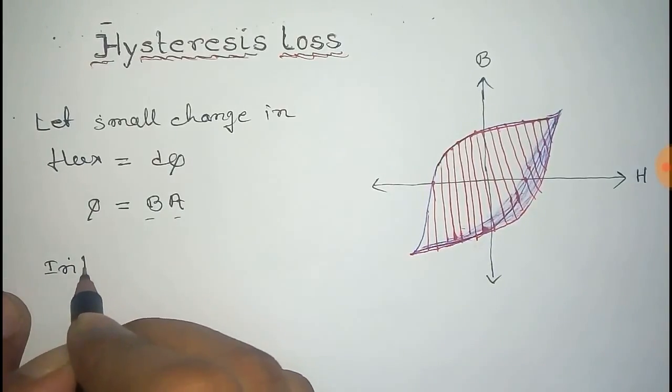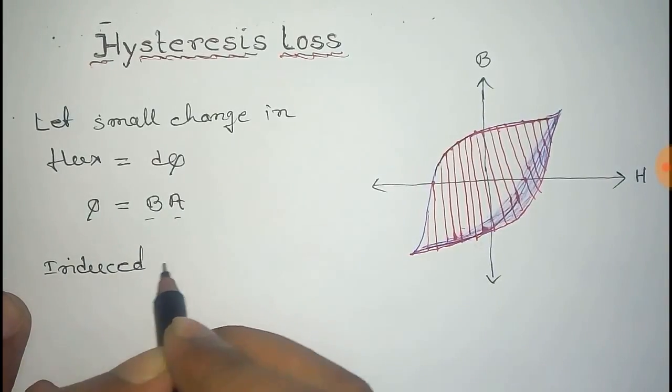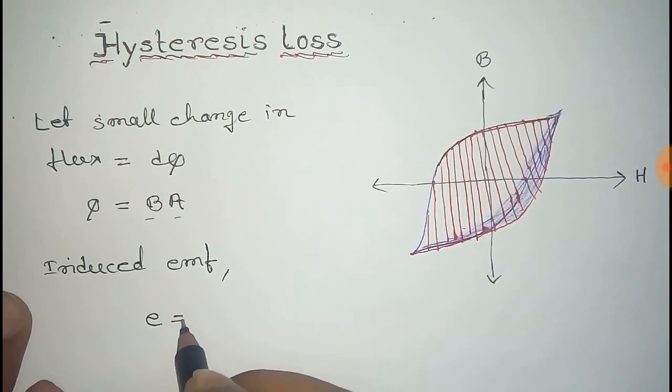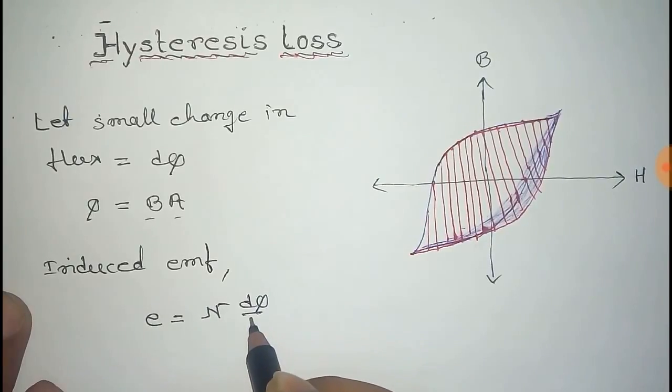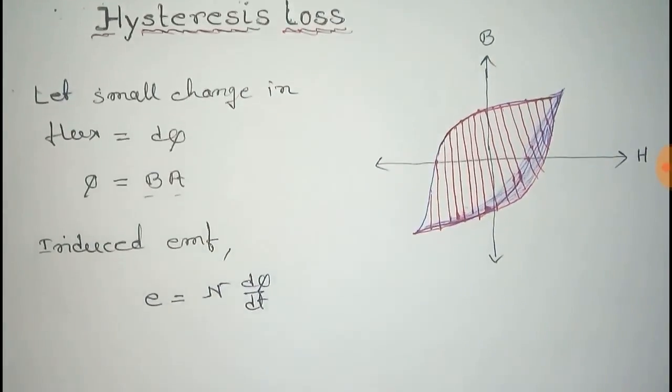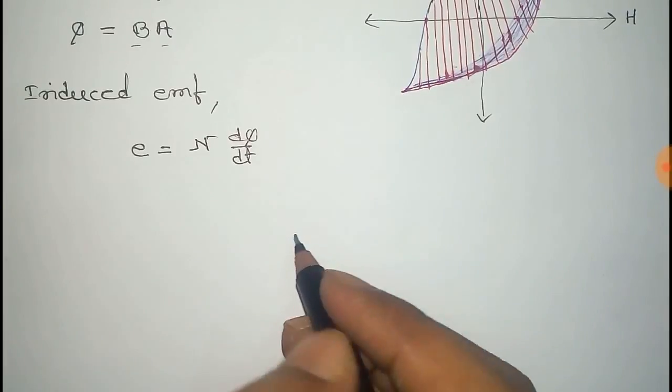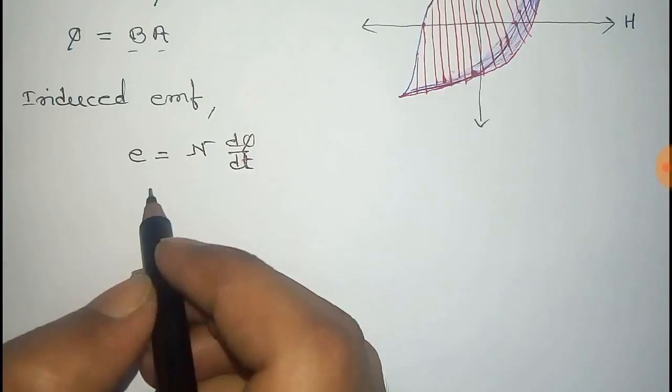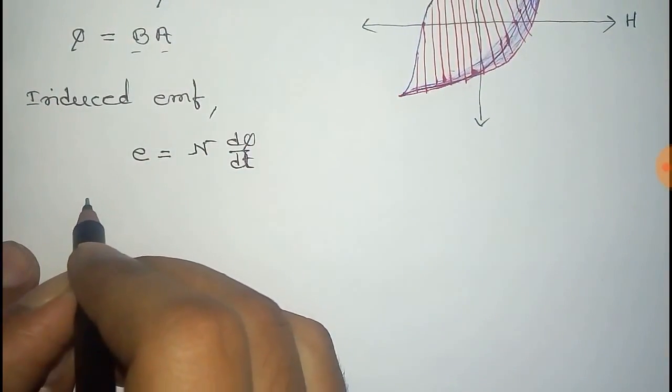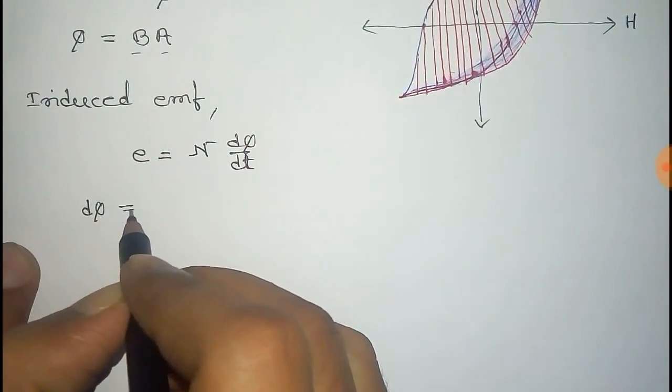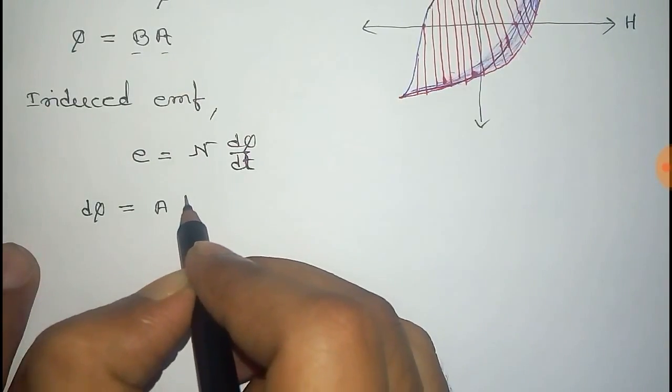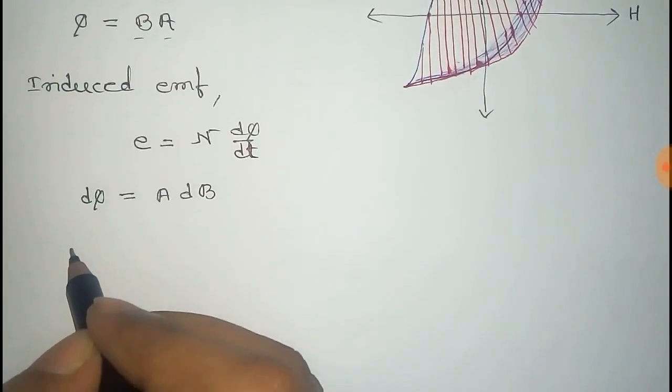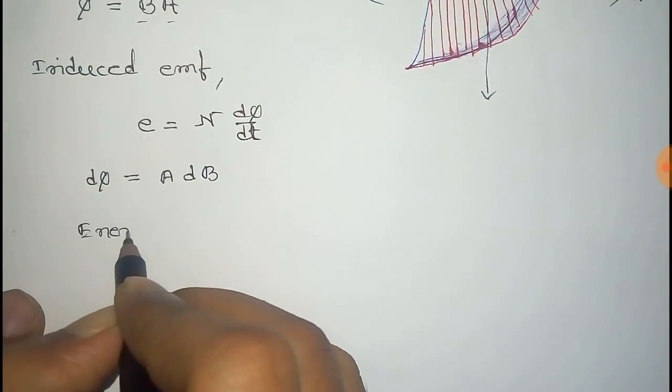And the induced emf due to this change of flux is given by E equals N dφ by dt. Here N is the total number of turns. Now from this relation, dφ equals A into dB because A is constant. Now the energy loss in this process...